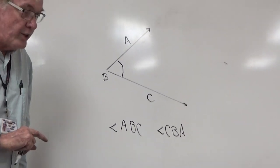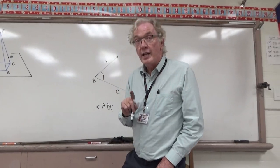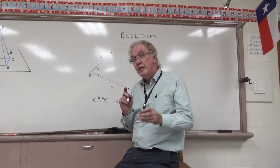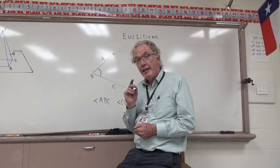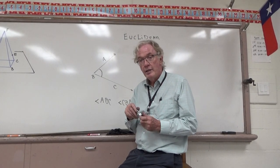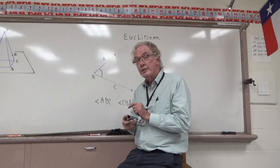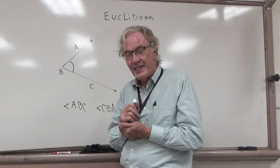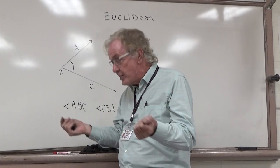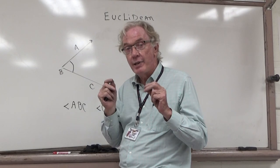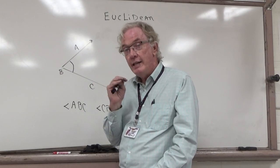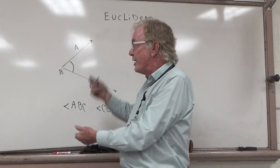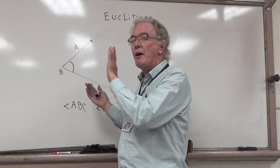Next: collinear points. Collinear points are points that lie on the same line. If points lie on the same line they must be collinear — points are collinear if and only if they lie on the same line. Then we have coplanar points. If collinear points lie on the same line, what about coplanar points? Coplanar points must lie on the same plane. Points are coplanar if and only if they lie on the same plane.